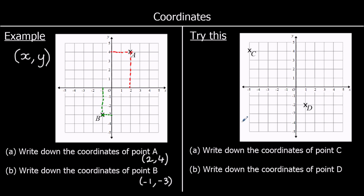Now 2 for you to try: write down the coordinates of point C and write down the coordinates of point D. Point C — we do x first — and its x-coordinate is negative 5, so negative 5, comma, and then the y-coordinate which is 4. So C is (negative 5, 4). And then D — again x first — that is 1, comma, and its y-coordinate is negative 2. So D is (1, negative 2).